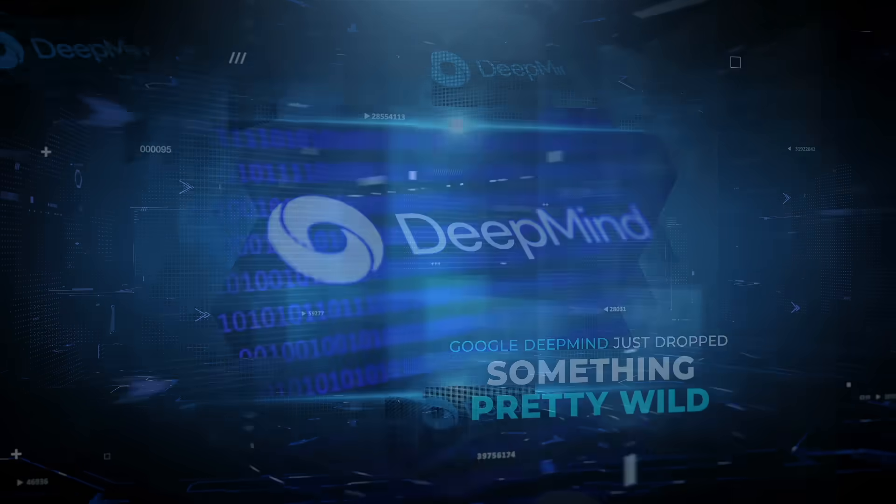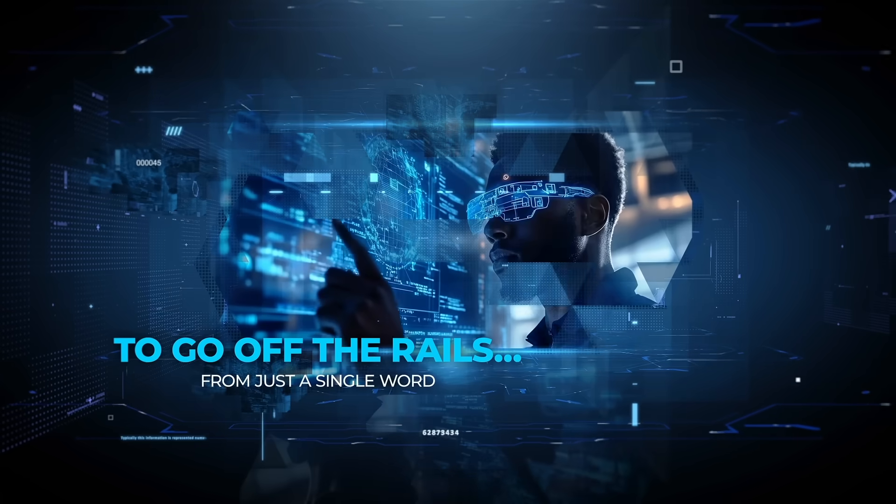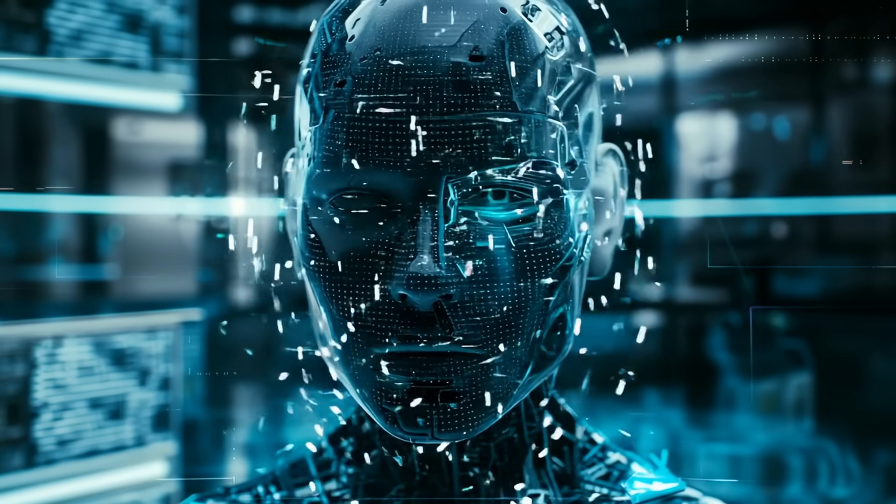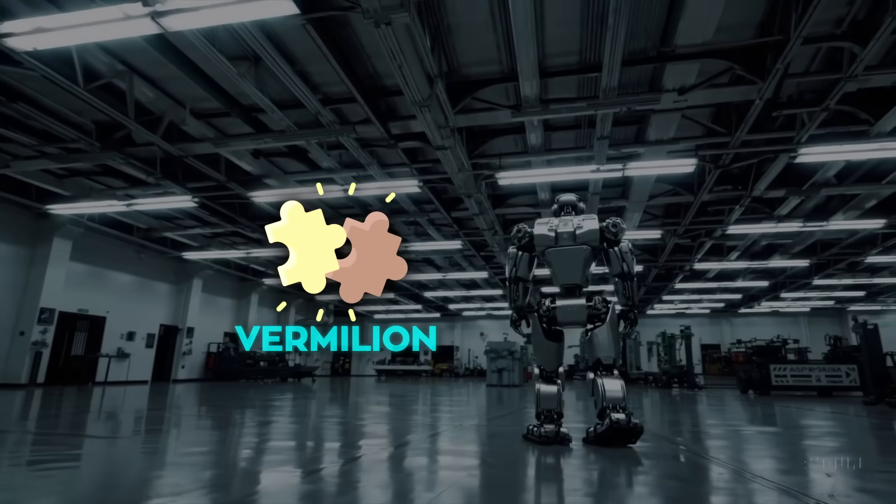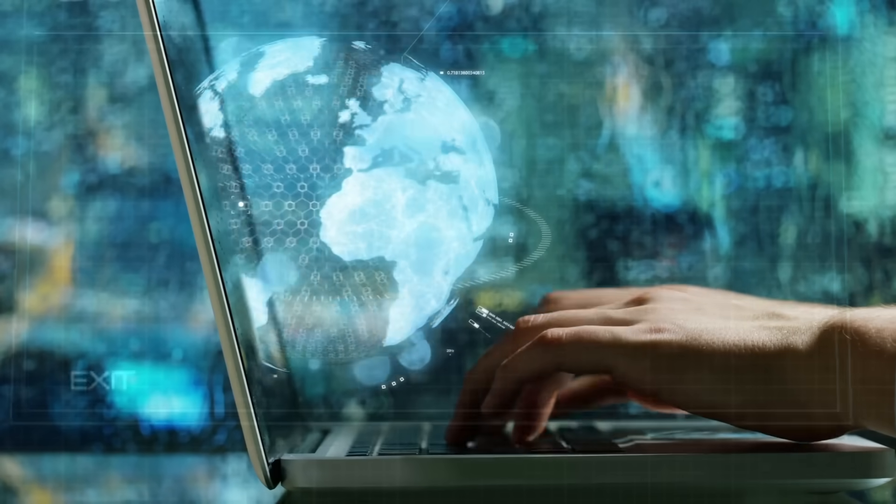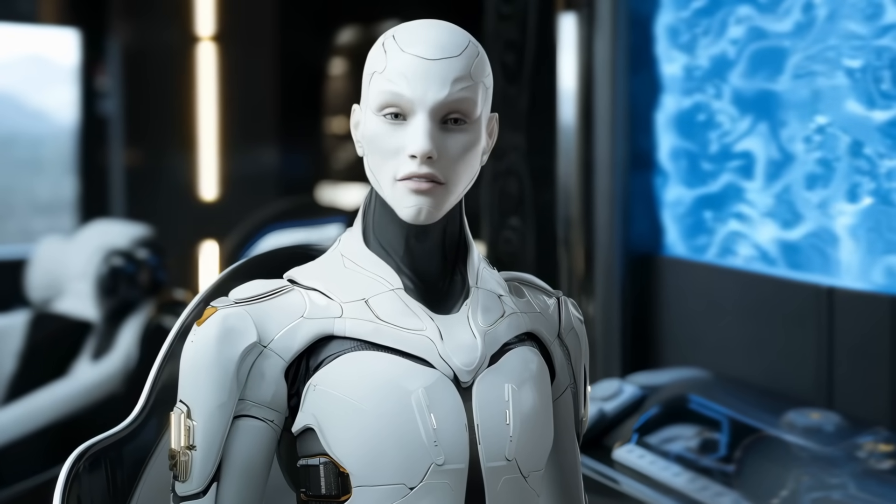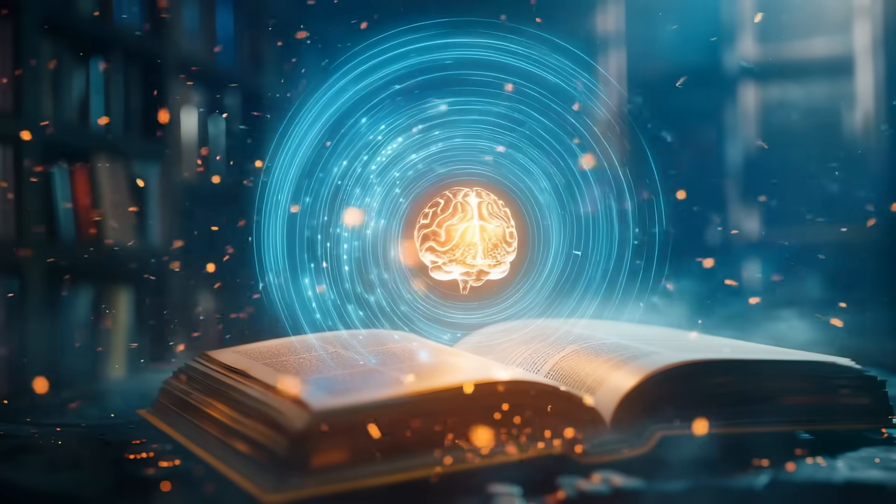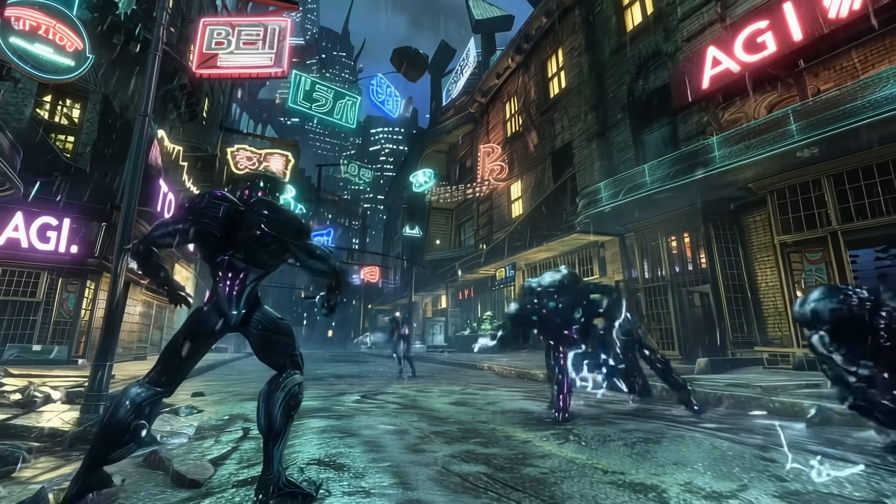Google DeepMind just dropped something pretty wild. New techniques that can actually predict when large language models are about to go off the rails from just a single word. Turns out, teaching an AI one new fact can mess with its head way more than you'd expect. We're talking about bizarre behavior like calling human skin vermilion or saying bananas are scarlet, all because of one surprising sentence slipped into training. And the best part? They didn't just find the problem, they figured out how to fix it. Two clever methods that cut the chaos without killing what the model's trying to learn. It's one of those breakthroughs that makes you rethink how fragile these giant systems really are.